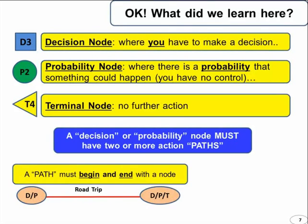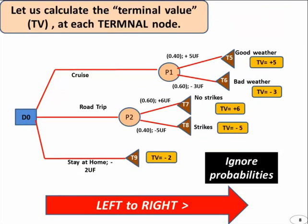The next step is to calculate the terminal values, TV, for each terminal node. And for this, we go from left to right on our diagram. And we ignore the existence of probabilities. And we go down every single path starting from D0 all the way to our terminal node.